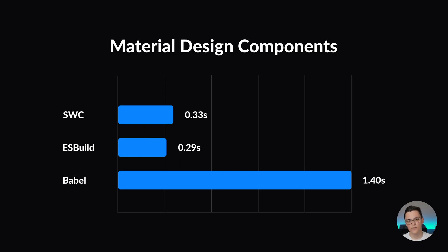The Material Design Components library is almost 10 times larger than Bootstrap, and we see a very different picture here. SWC is now slower than ESBuild. Both SWC and ESBuild still maintain their significant performance advantage compared to Babel, which is now even slower.